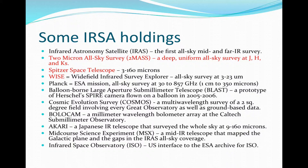Planck is an ESA mission with an All-Sky survey between 30 and 857 gigahertz. There's also data from BLAST, which is submillimeter; COSMOS, a multi-wavelength survey of an extragalactic field; BOLOCAM, a millimeter telescope; AKARI, a Japanese infrared telescope that surveyed the whole sky; and MSX, a mid-infrared telescope from the U.S. Air Force that mapped the galactic plane and specifically tried to cover the gaps in the IRAS All-Sky coverage. ISO, the Infrared Space Observatory, is also available — IRSA was the U.S. interface to the ESA archive for ISO.